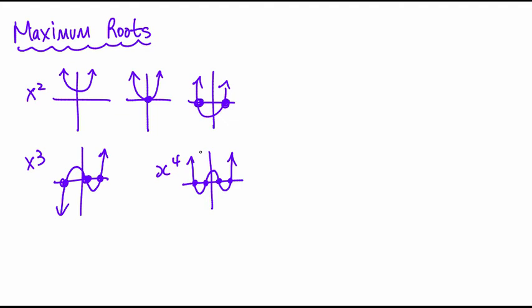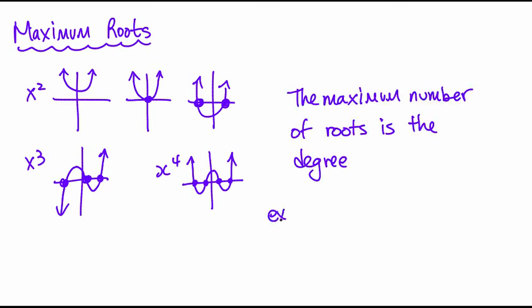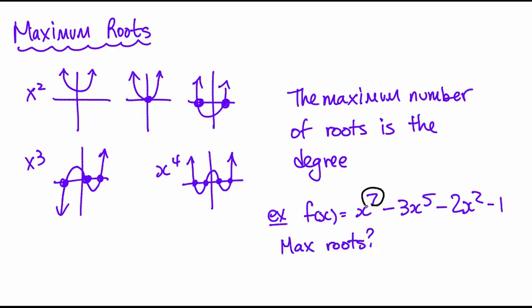It turns out that the maximum number of roots is highly related to the degree. In fact, that's what it is. Even if I just give you a function like x to the 7th minus 3x to the 5th minus 2x squared minus 1, you have no idea what this thing looks like. And I just say, how many roots does this have at the most? Hopefully you realize that that answer is 7. Now, it doesn't mean that it has 7 roots or 7 x-intercepts that you'll necessarily see, but the maximum number of roots that it could possibly have is 7.